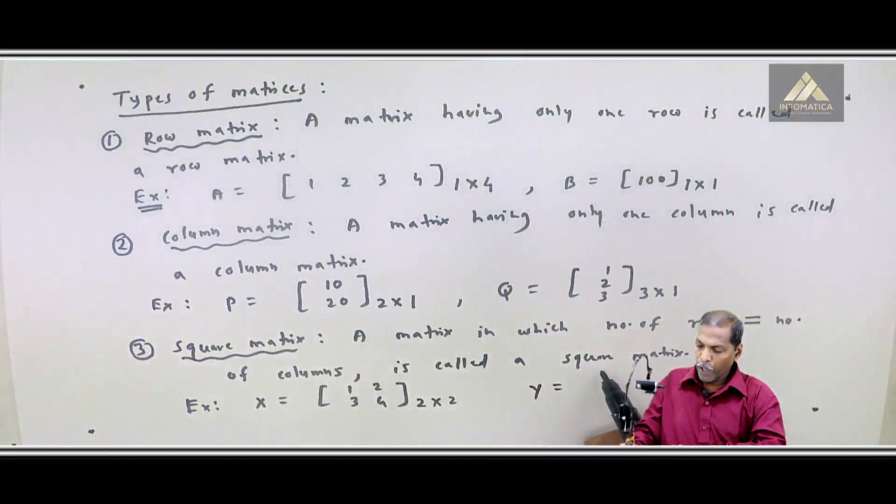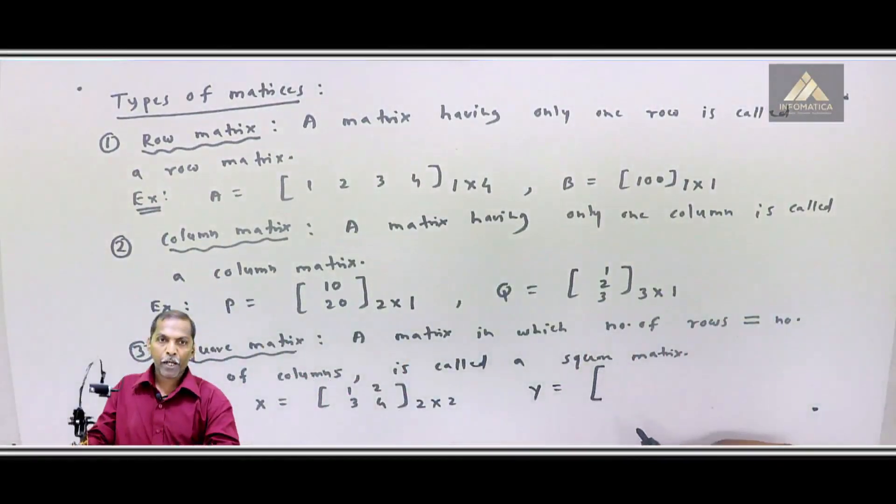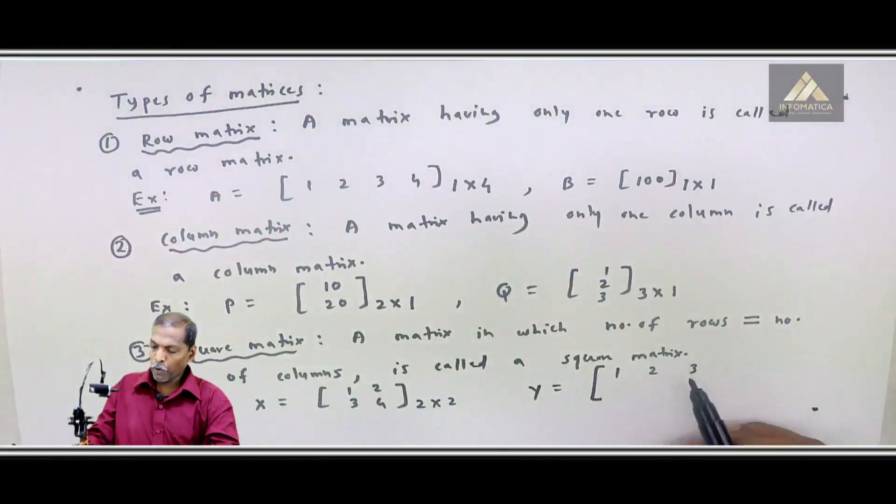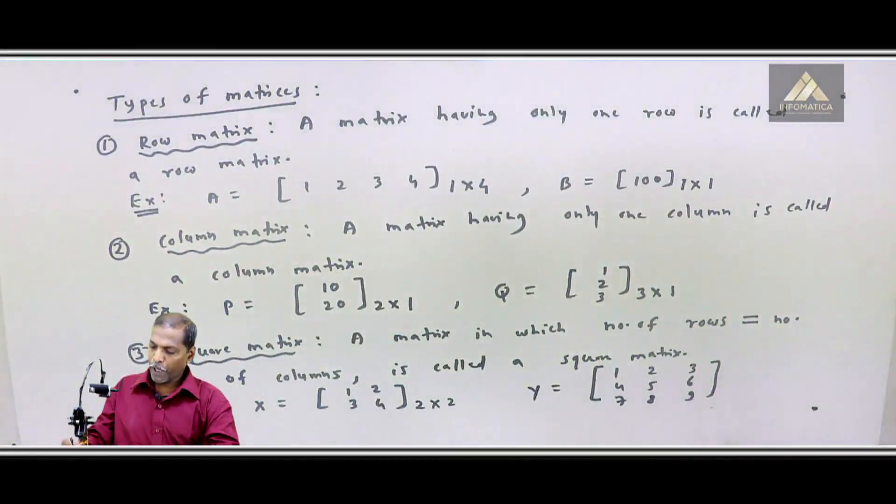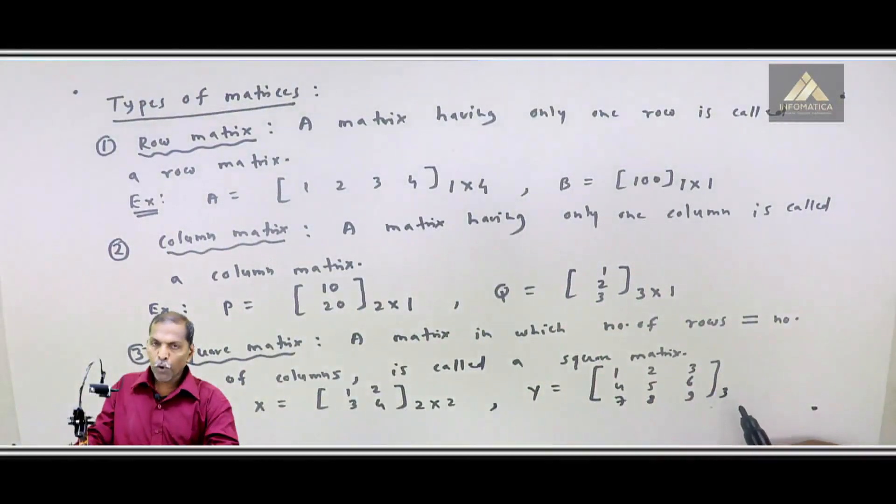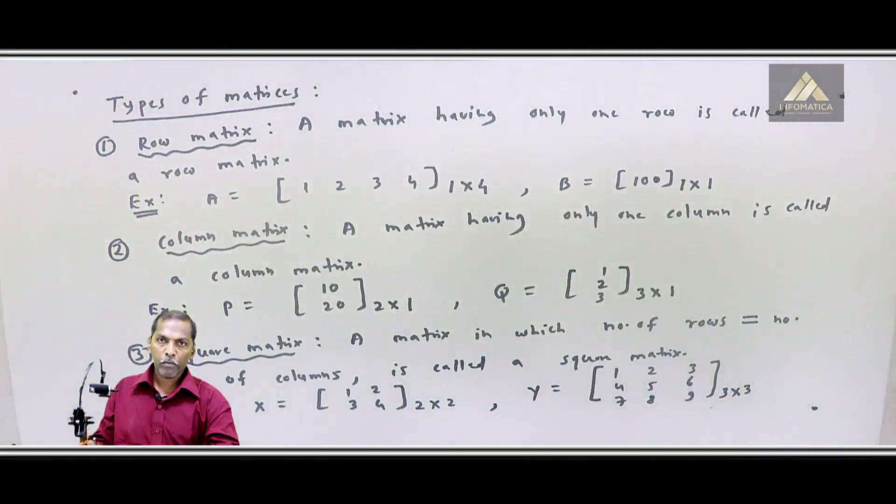Second example, Y equal to matrix 1, 2, 3, 4, 5, 6, 7, 8, 9. So Y is a matrix of order 3 by 3. So Y also example of square matrix.